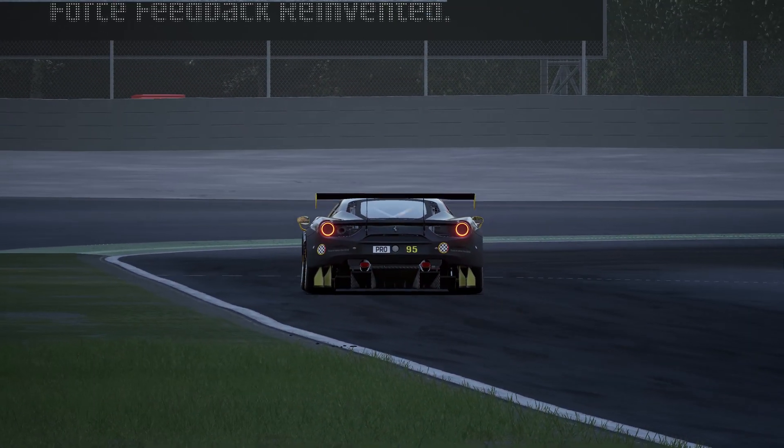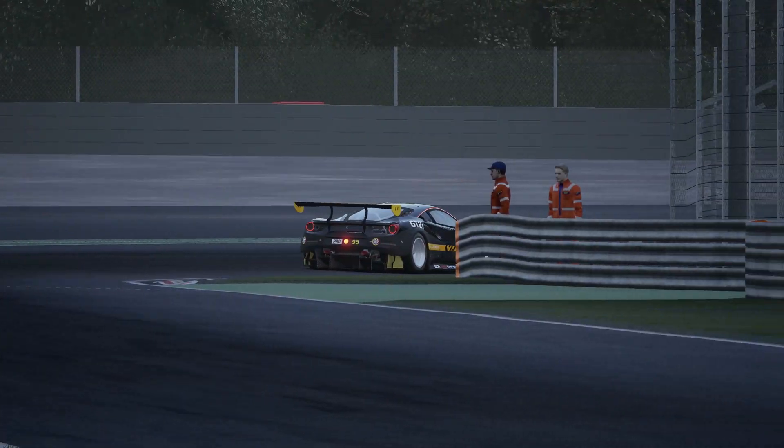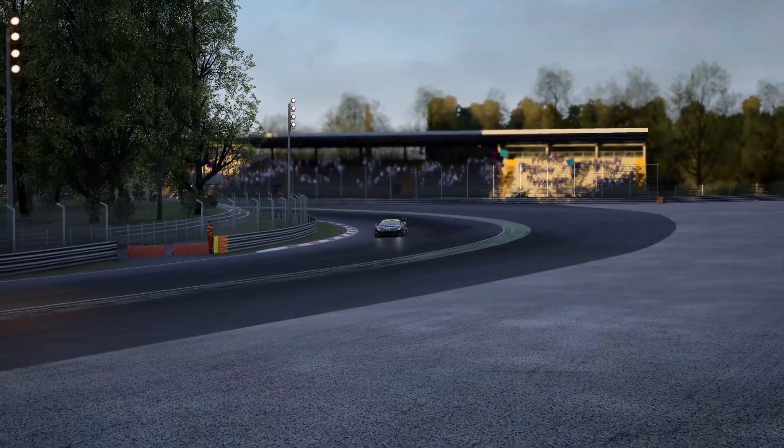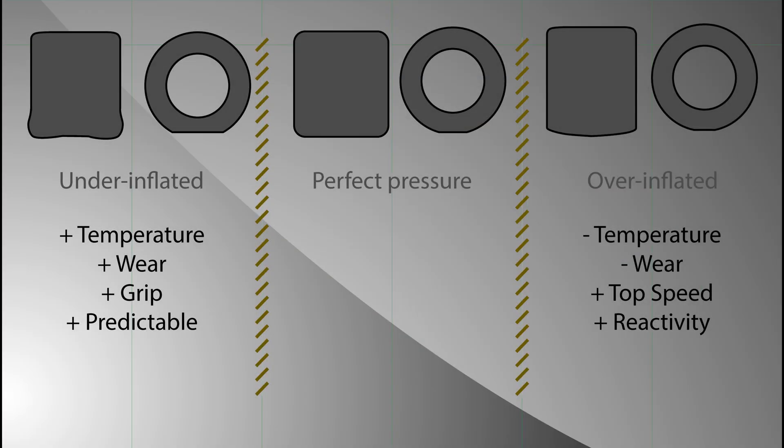Before going on track, let's see what is at stake here. At the left you see an under-inflated tire. The edges are a little bit squeezed and there is a bigger contact patch between the tire and the ground. Because the contact patch is bigger, you're going to have more friction that will generate more heat, and more friction will also generate more wear.